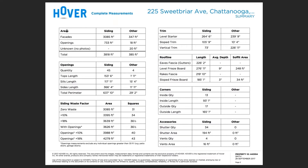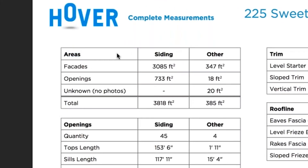Let's start off in the top left-hand corner in the area table. You'll notice there's a siding column and another column. We begin to give you information within the siding areas of the home and the other sections. Siding is made up of lap siding, shake, scallops, vertical siding, and other siding-like components. Other would be made up of brick, stone, metal, and similar components. In this specific example, we're seeing that there is 3,085 square feet of siding wall area alone.